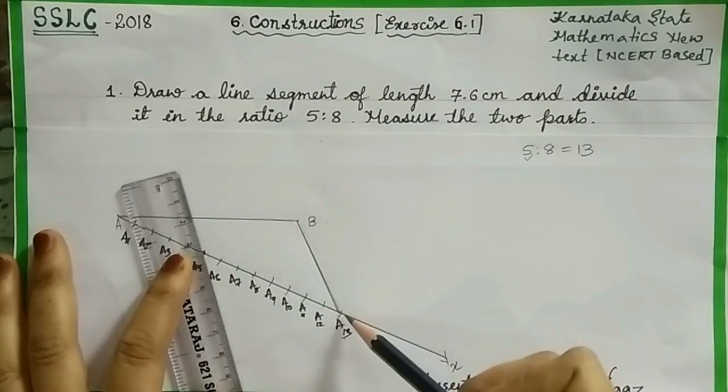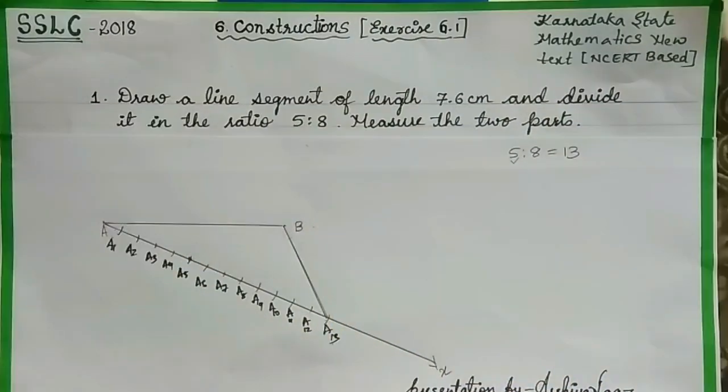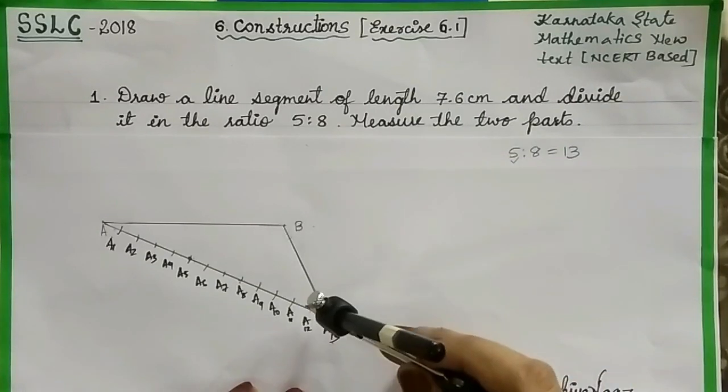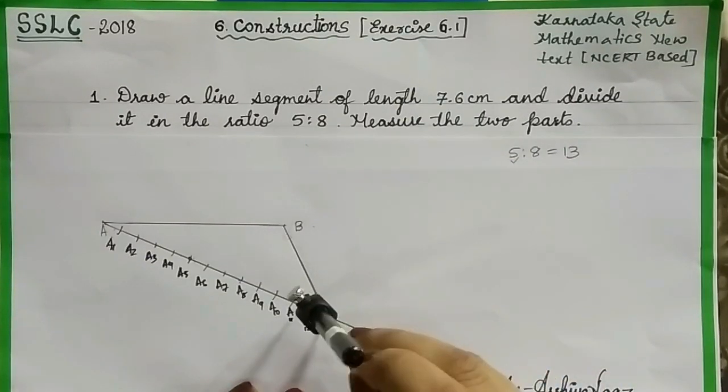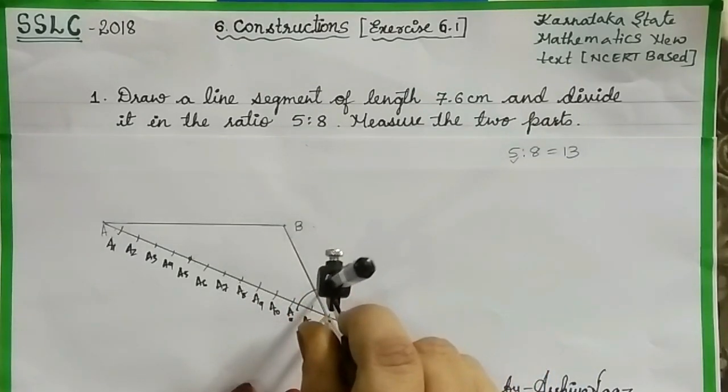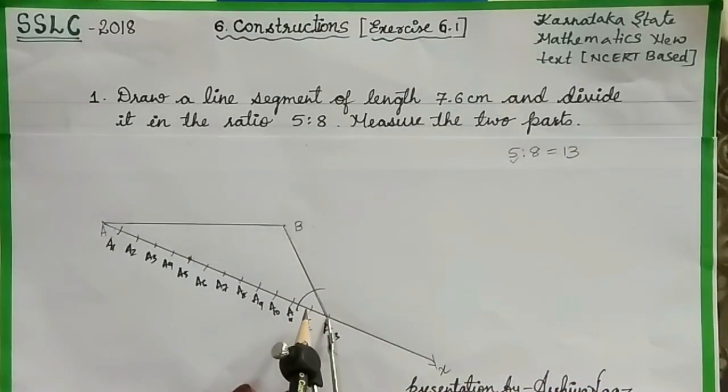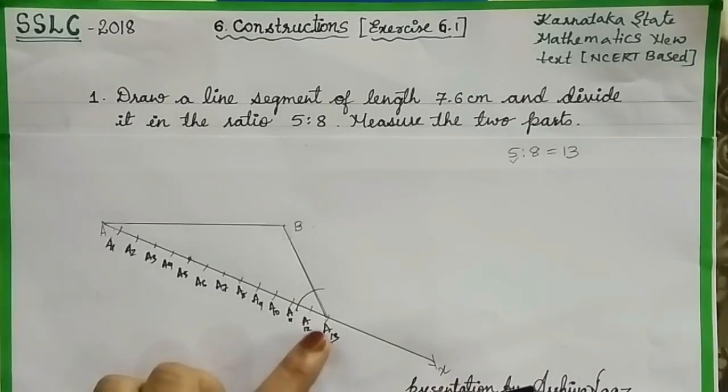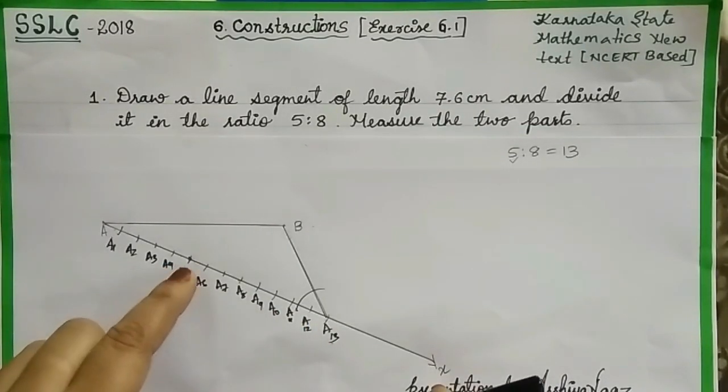So from here we have to draw a line which is parallel to A13B. For this, take a compass, adjust it to any radius. Here, draw an arc as I am showing to you. From point A13, we want a parallel line from A5.